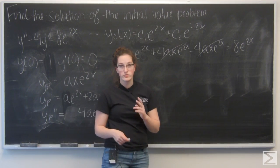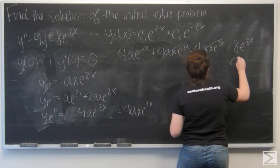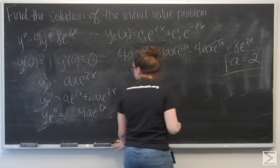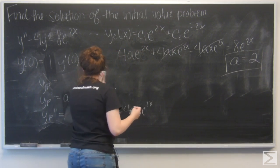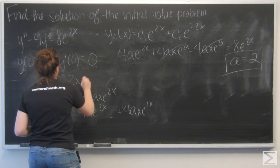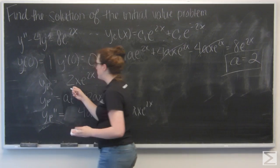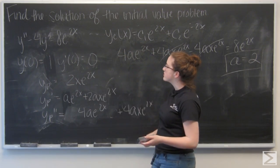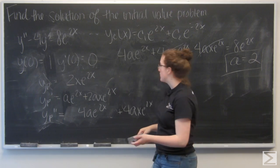4ae equals 8, a equals 2. So now I know that yp equals 2x e to the 2x, and I can use that along with yc to write the general solution for this system.